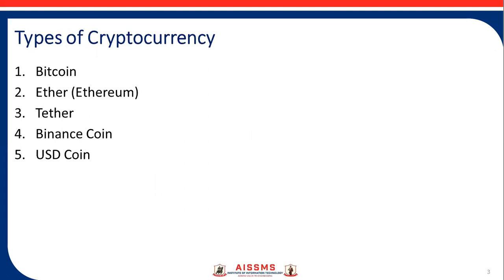There are different types of cryptocurrency. The first one is Bitcoin, then next is Tether, then Binance Coin, and the last is USD Coin.